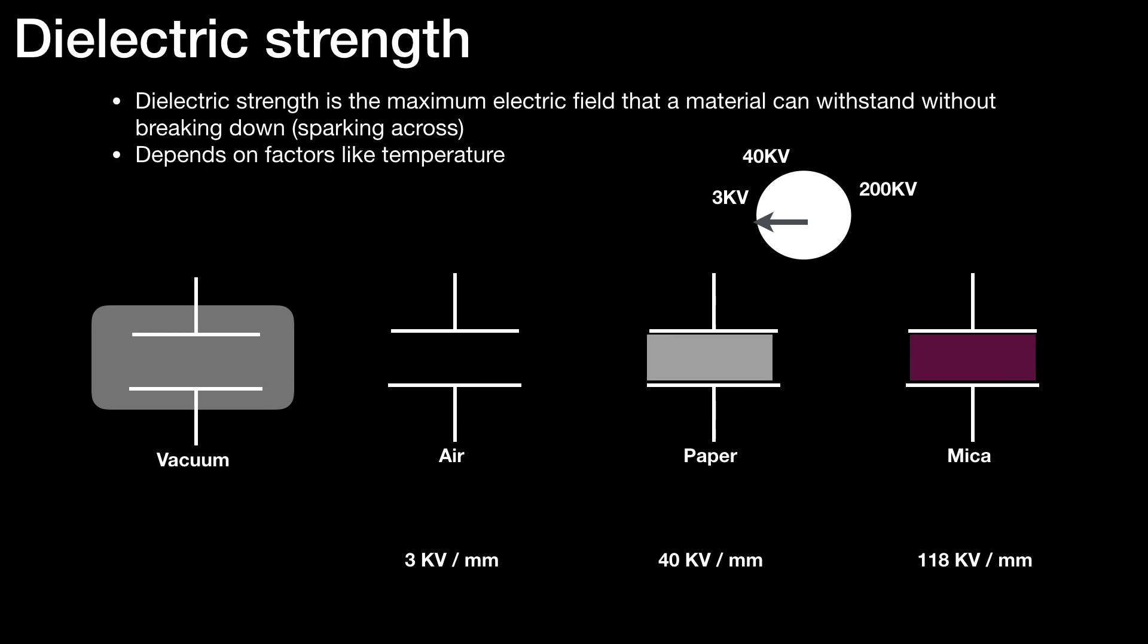So let's look at some of the dielectric strengths that we've got. If we look at the air capacitor, we see that it's 3 kilovolt per millimetre. So if you had a vane capacitor and the vanes were one millimetre apart, you could theoretically, with dry air, have a voltage across the vanes of 3 kilovolt before the capacitor sparked across.